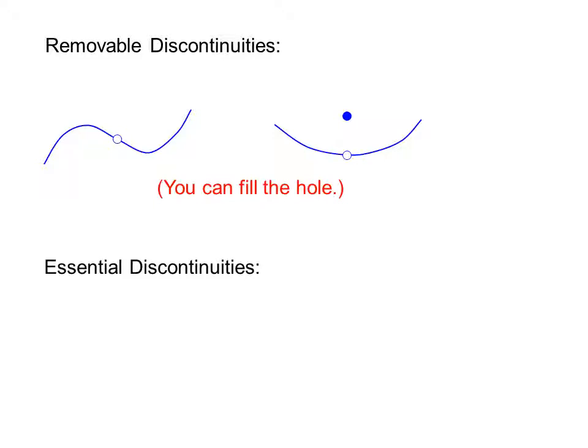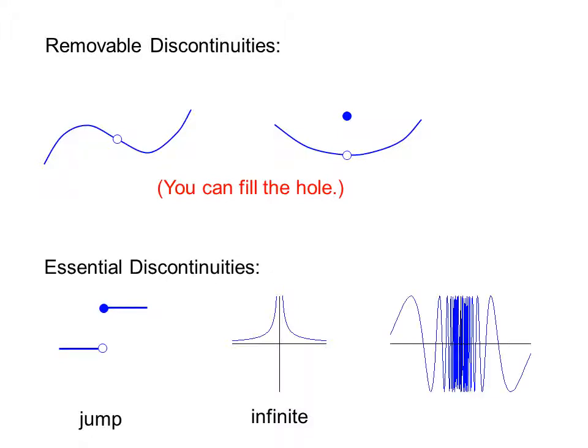Other discontinuities are classified as essential discontinuities. One example is the jump discontinuity. Another example is the infinite discontinuity. And the final example is my favorite discontinuity and I hope soon to be yours, the oscillating discontinuity. In none of these cases can we just fill the hole with one point.